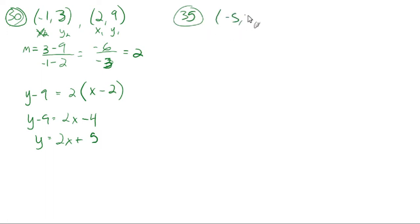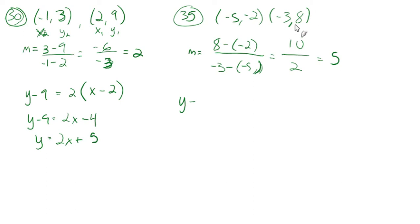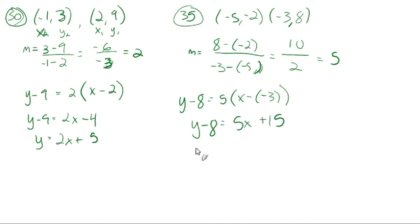Number 35: we're given (-5, -2) and (-3, 8). Again, find the slope: 8 minus negative 2 over negative 3 minus negative 5, which is 10 over 2, giving a slope of 5. Using point-slope form with (-3, 8): y minus 8 equals 5 times x minus negative 3, so y minus 8 equals 5x plus 15, and y equals 5x plus 23. If you have two points, just find the slope and put it in point-slope form.